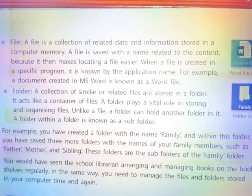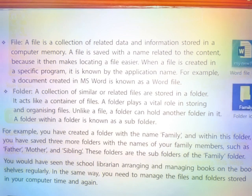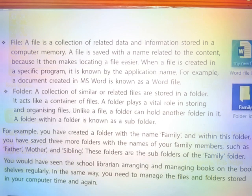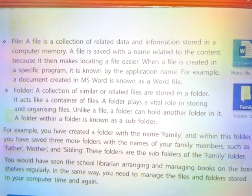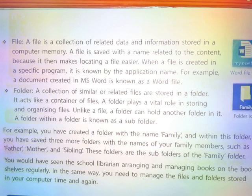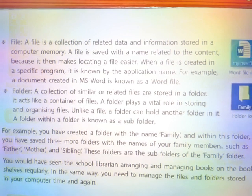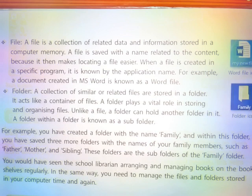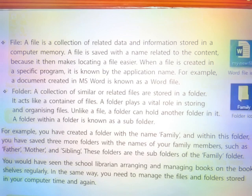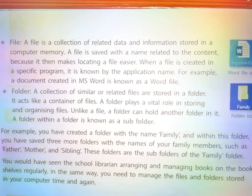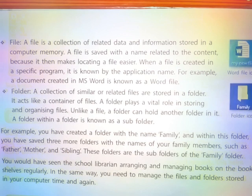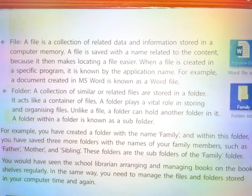A file is a collection of related data and information stored in a computer memory. A file is saved with a name related to the content, because it then makes locating a file easier. When a file is created in a specific program, it is known by the application name. For example, a document created in MS Word is known as a Word file.